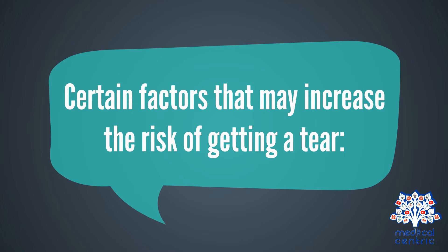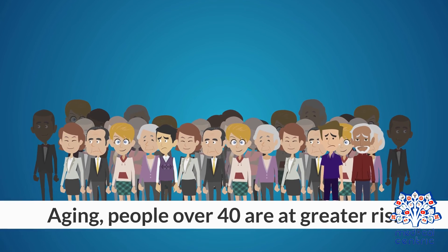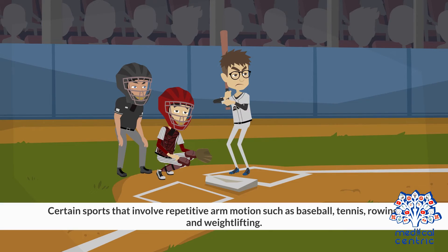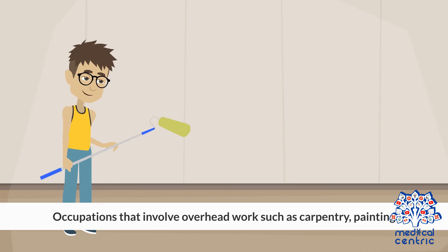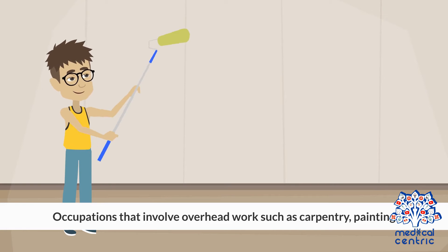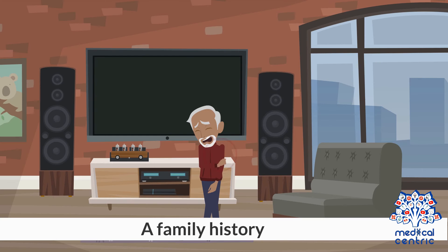Certain factors may increase the risk of getting a tear: aging, as people over 40 are at greater risk; certain sports that involve repetitive arm motion, such as baseball, tennis, rowing, and weightlifting; occupations that involve overhead work, such as carpentry and painting; and a family history.